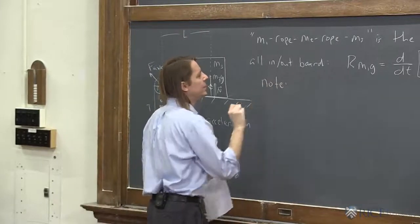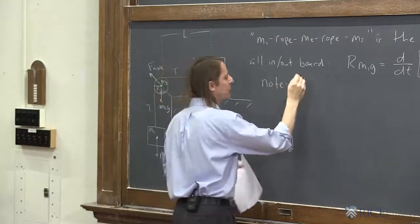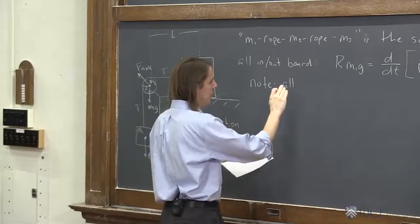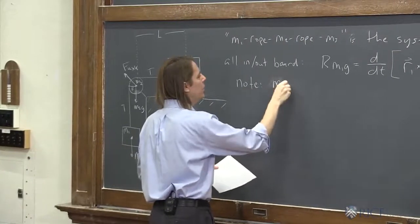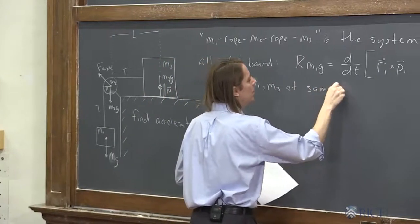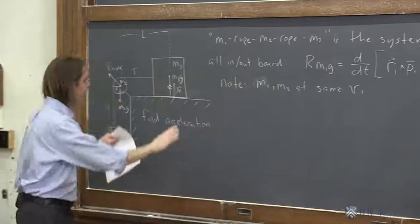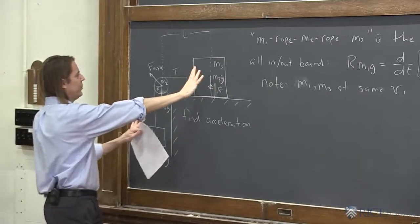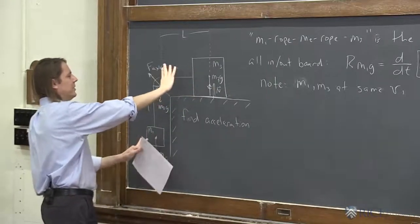Note all, not all the masses. M1 and M3 are at the same V. That's this thing we assume the string isn't stretchable, so they're going to have the same velocity at some instant in time.